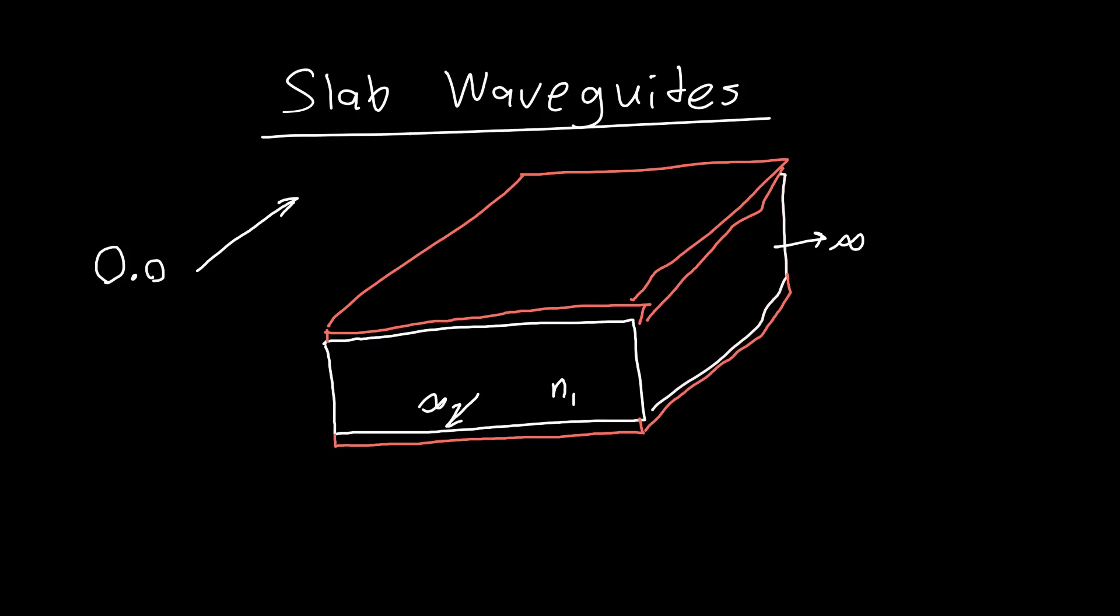The reason we're analyzing a slab is because this will allow us to work essentially just in two dimensions, and that's really nice. We'll get an intuition for what solutions look like in three dimensions when we have real waveguides like rectangular waveguides or fiber optic cables, which are just cylindrical waveguides. The slab waveguide is sort of the first step along that path.